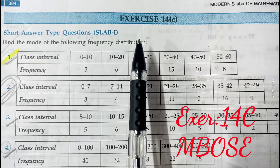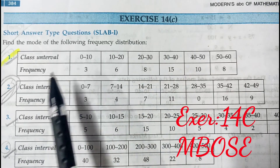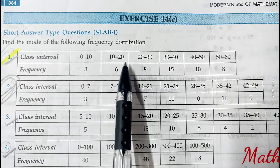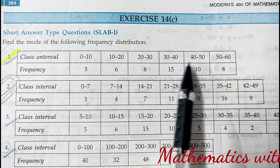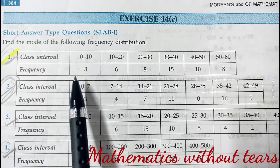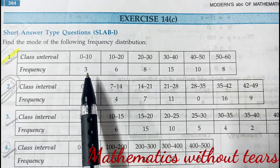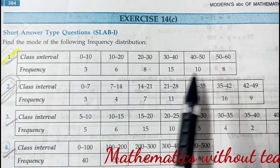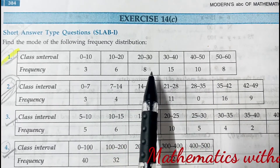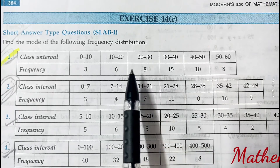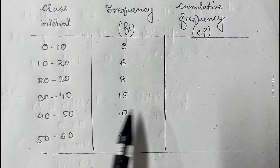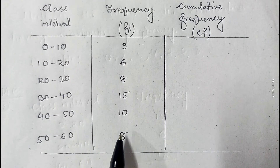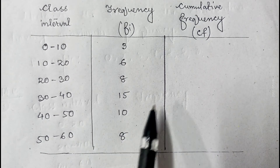In exercise 14C, the first question gives class intervals 0 to 10, 10 to 20, 20 to 30, up to 60, with corresponding frequencies 3, 6, 8, 15, 10, and 8. We are to find the median of this grouped frequency distribution. In this case, class intervals and corresponding frequencies are given, so first of all we have to calculate the cumulative frequency.